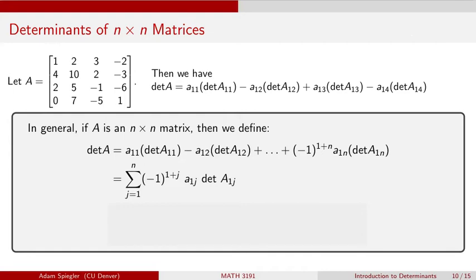And there's nothing particularly special about going across the first row. We could adjust this to instead say we're going to come across the second row by changing all of these ones to twos. And we can pick any row that we want to come across.